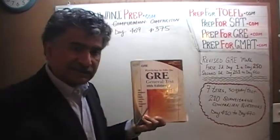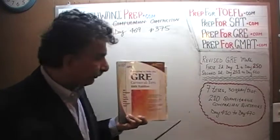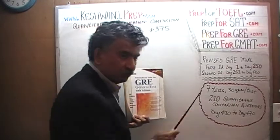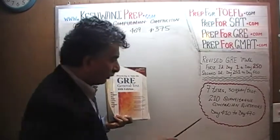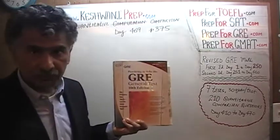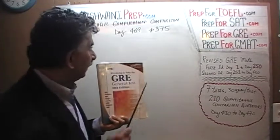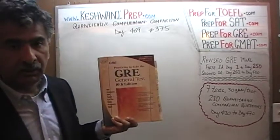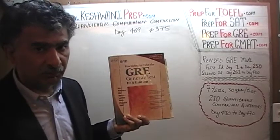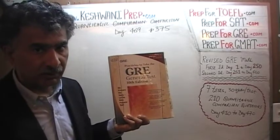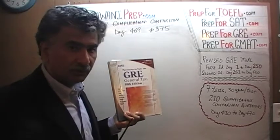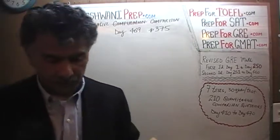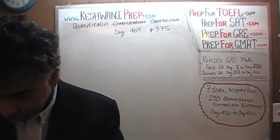This book contains 7 exams. Each exam has 30 questions in it, for a total of 210 quantitative comparison questions. The series is going to end tomorrow. Today is our penultimate day. We spend 10 days per exam, per test, and therefore there are going to be 70 videos.